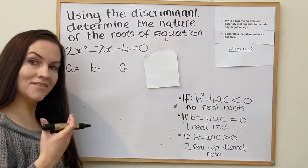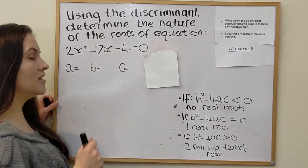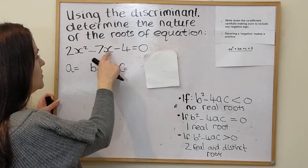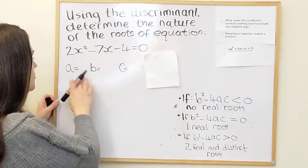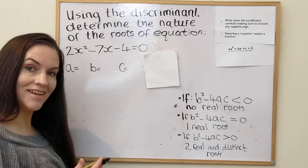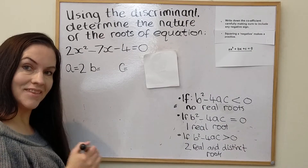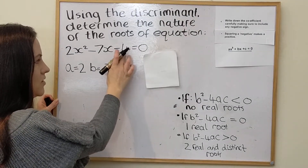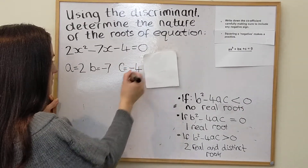Now for another example: using the discriminant to determine the nature of the roots of the equation 2x squared minus 7x minus 4. As before, we write down the values of a, b, and c, making sure to include any negatives. So the a value is 2, the b value is minus 7, and the c value is minus 4 — just be careful to include that.